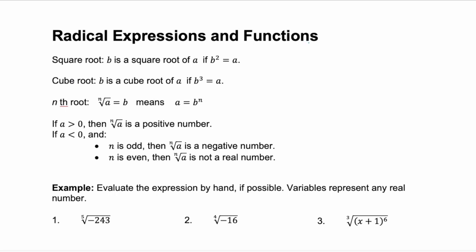You've probably seen radical expressions before, something like the square root of 4, and the square root of 4 we know is 2. So a square root b is a square root of a if b squared equals a. So the square root of 4 is 2 because 2 squared is 4.